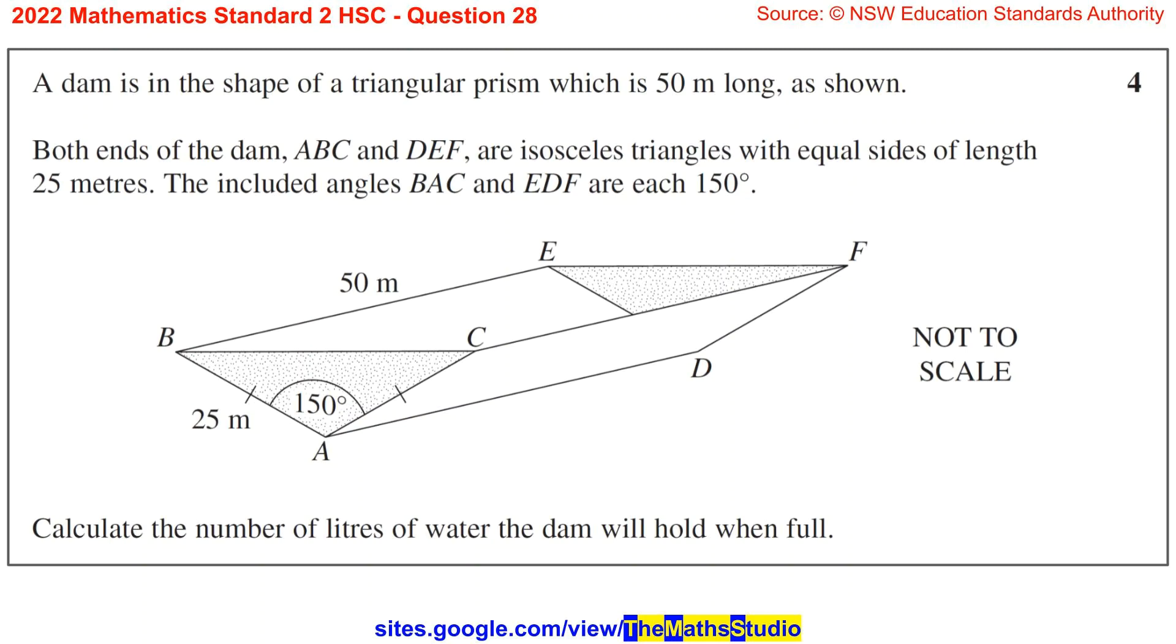Both ends of the dam, ABC and DEF, are isosceles triangles with equal sides of length 25 metres. The included angles BAC and EDF are each 150 degrees. Calculate the number of litres of water the dam will hold when full.